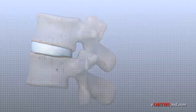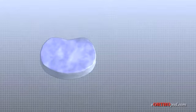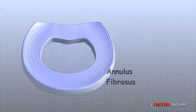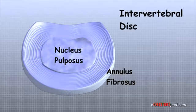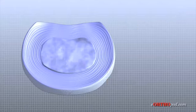An intervertebral disc is made up of two parts. The center, called the nucleus pulposus, is spongy and acts like a shock absorber to cushion the force between each vertebra. The nucleus is surrounded by a series of strong ligamentous rings called the annulus fibrosus. Ligaments are made of strong connective tissue and connect one bone to another. The annulus fibrosus is a special ligament that connects two vertebrae together.